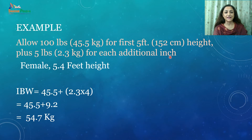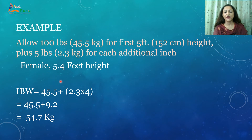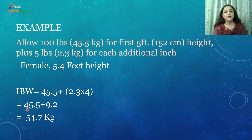Let us understand with an example. Take a female who is 5 feet 4 inches tall. Ideal body weight calculation: 45.5 kg for the first 5 feet, plus 2.3 kg × 4 additional inches = 9.2 kg. So 45.5 + 9.2 = 54.7 kg is her ideal body weight.